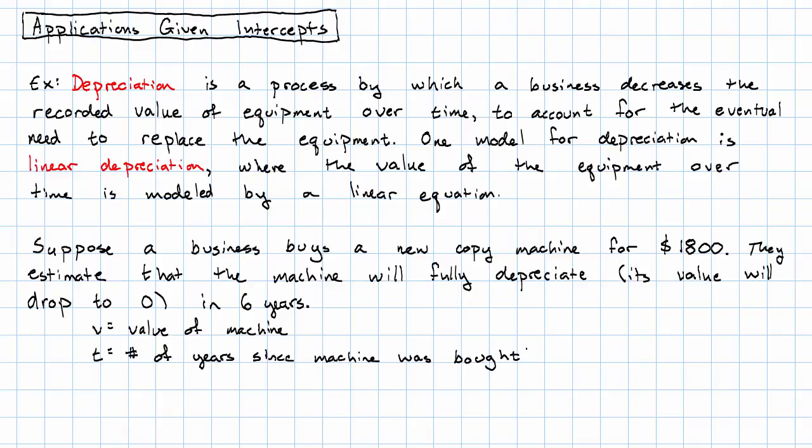Whereas if you say, I want to wait till the value of this copy machine is $300, you have to do some calculations to figure out when that will happen. So t is the independent variable.